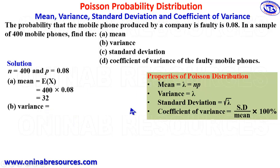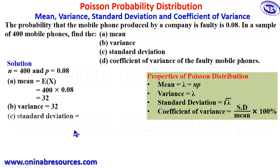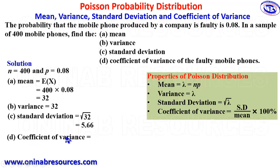For the variance, we said it is equal to the mean — that's one of the unique properties of Poisson probability distribution, so variance equals 32. For standard deviation, it is the square root of the variance, which is the square root of 32, giving us 5.66.